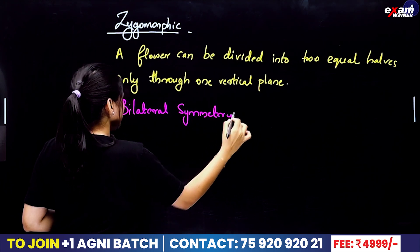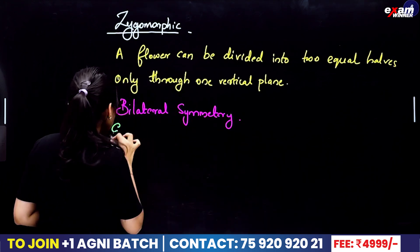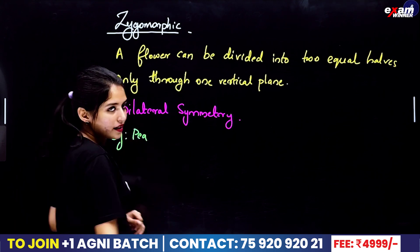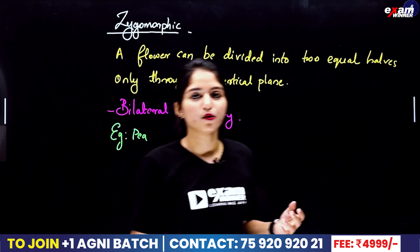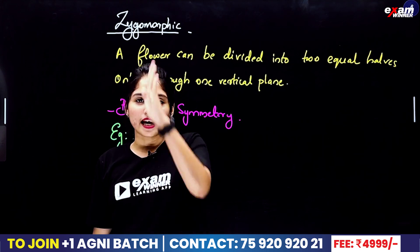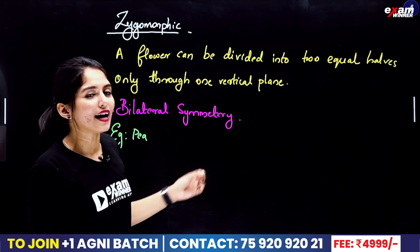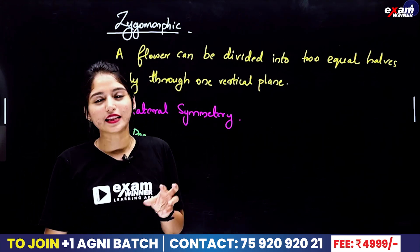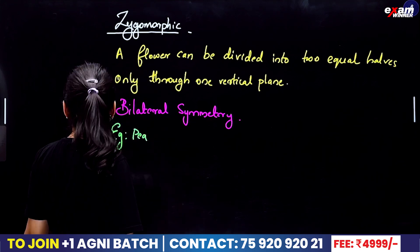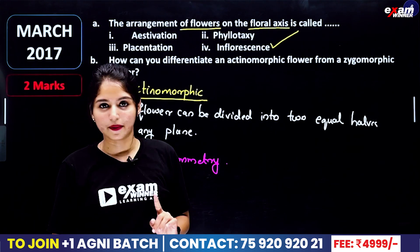Can we do an example? The example is the pea plant. So what is the symmetry of the actinomorphic and zygomorphic flowers? We have two questions here.